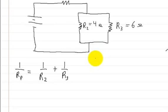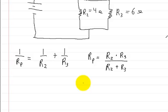You could also use, if you have two resistors, only two resistors in parallel, you can use this formula, which is the resistance in parallel is equal to, in this case it's going to be R2 and R3. So it's R2 times R3 over R2 plus R3. And let's work these both out to show you that you get the same answer.